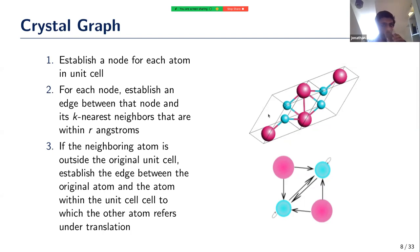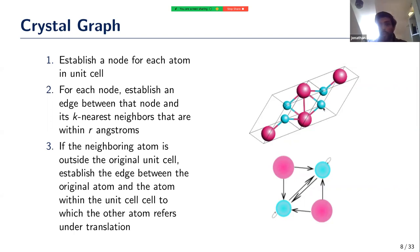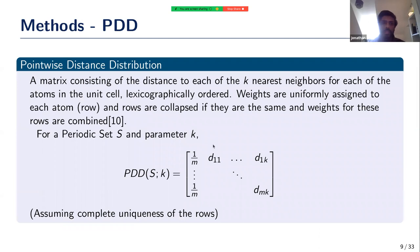Taking a lutetium atom as an example, its two nearest neighbors are a silicon atom within the unit cell and another silicon atom outside the original unit cell. To accommodate the fact that this second atom is outside the unit cell — and we don't have a node for it — we place an edge between the original atom and the node which refers to that atom under translation. The result is a node for the lutetium atom with two edges: one to each silicon atom.